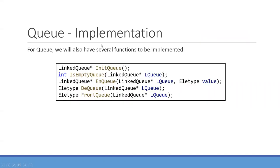With that definition, we can declare some functions to implement Queue. The first one is initQ, which generates an empty Queue. The second is isEmptyQ, which checks whether the Queue is empty. Then we have enqueue and dequeue for operations. FrontQ lets us get the first element at the front end of the Queue so that we can retrieve its data.